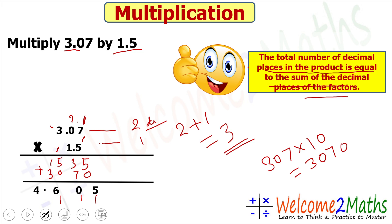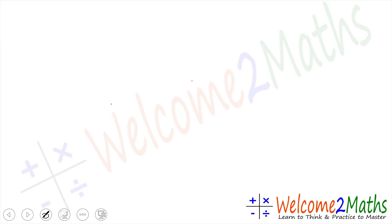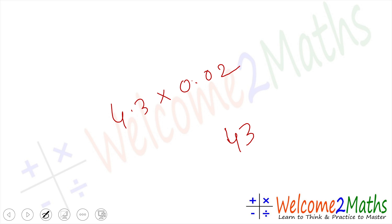Let me show you another example. If you have 4.3 multiplied by 0.02, the same method applies. First, write without decimal points: 4.3 becomes 43, and 0.02 becomes 2. Then multiply: 43 into 2 is 86. Now we need to place the decimal point.